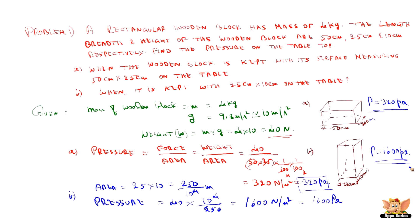So we understand that when the area is higher — 50 by 25 cm — the pressure is 320 Pascal. Whereas when the area is smaller, the pressure is 1600 Pascal. This particular example gives us a clear understanding of how pressure depends on the area, even if the weight or force is the same.